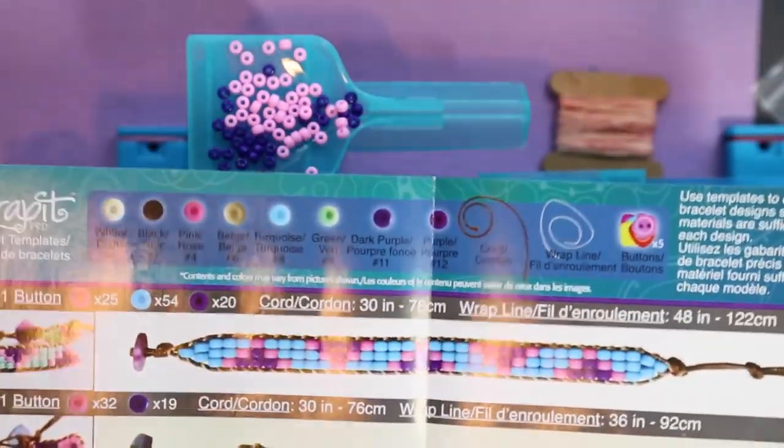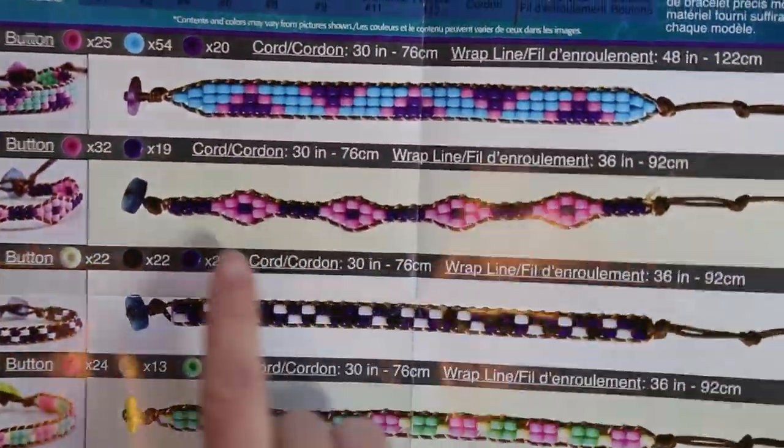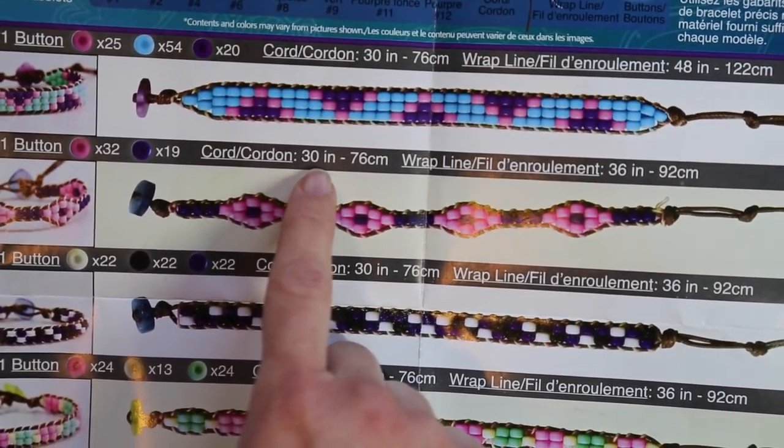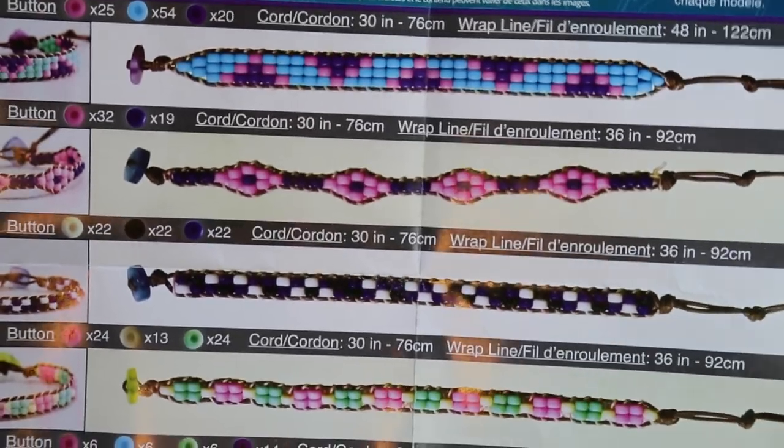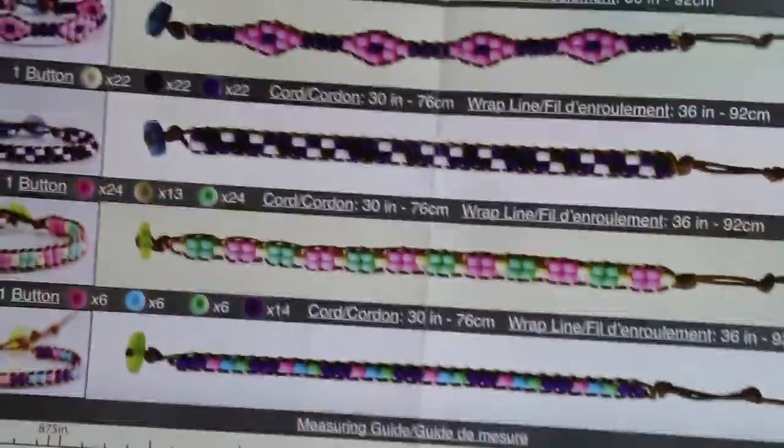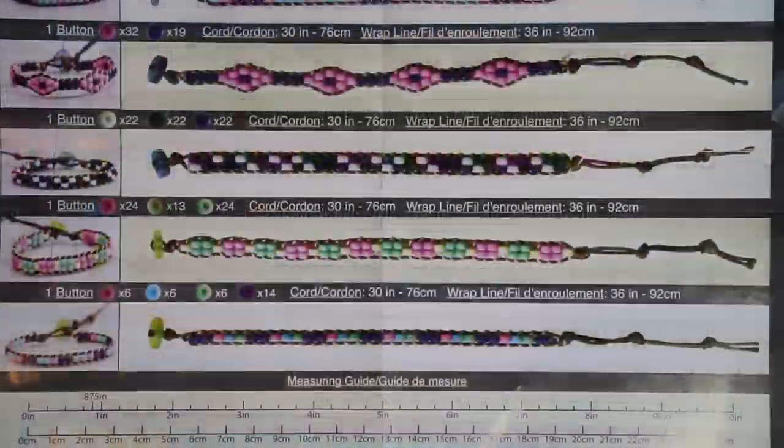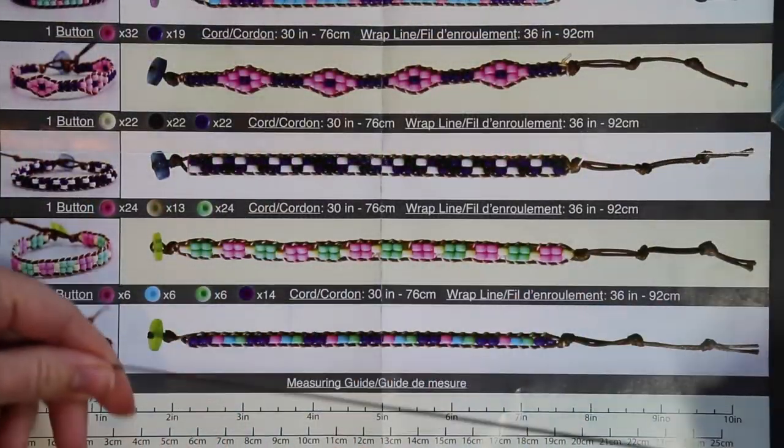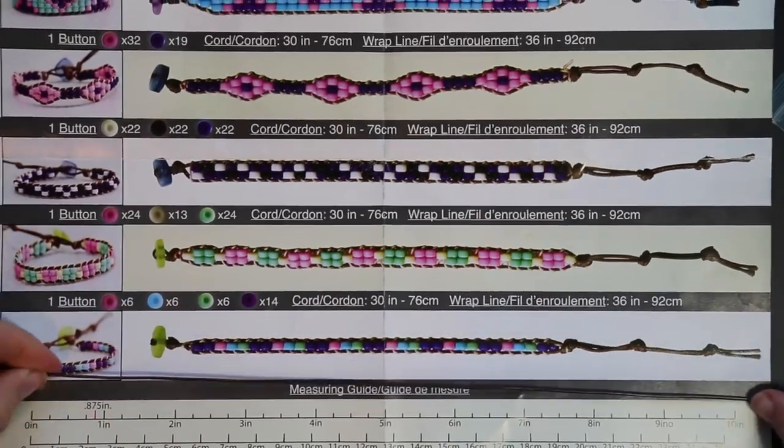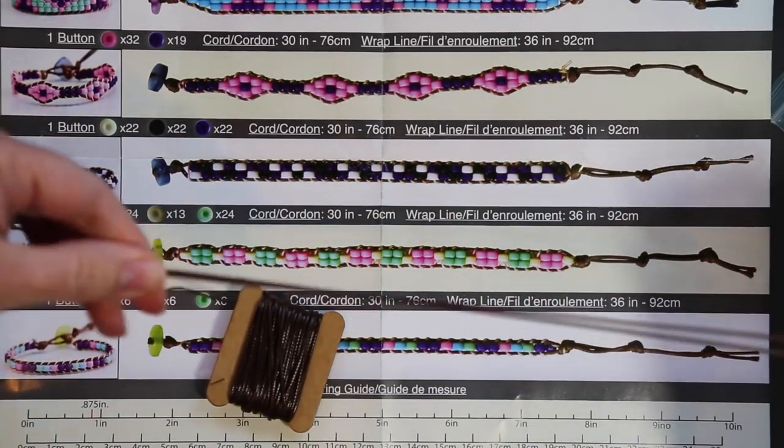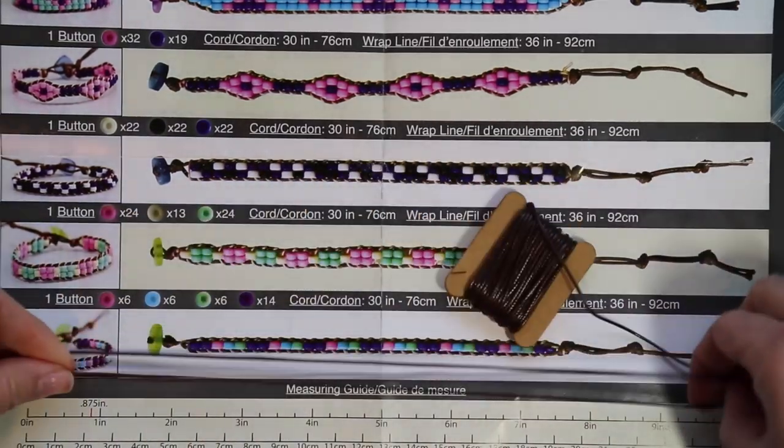I've got all my materials ready and the first thing it tells me to do is to cut a piece of cord 30 inches long. Really useful at the very bottom of this page, they even gave me a ruler so if I want to get 30 inches of the cord I'll need to do this length three times. So that's one, two, three.